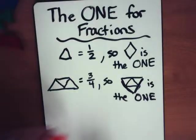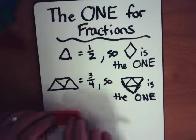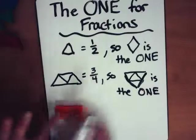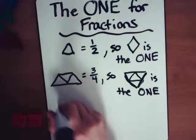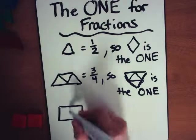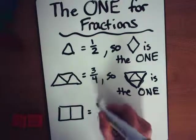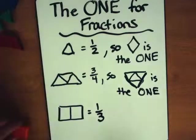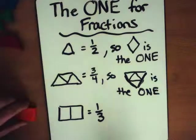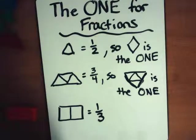So this last one we're going to do with shapes. We've got two squares. So we've got two squares right there. And two squares is equal to one-third.